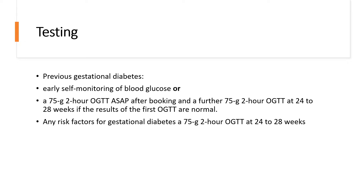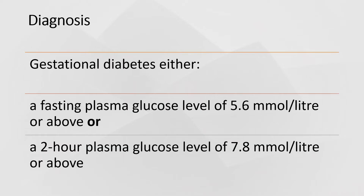For women with antenatal glycosuria, also offer glucose testing — this may be a GTT if they are within the 24–28 week window, or based on trust guidance depending on gestation. Very important: the diagnosis of gestational diabetes uses either/or criteria, and exam questions have specifically tested this. Gestational diabetes is diagnosed if there is either a fasting blood glucose of 5.6 mmol/L or above, OR a two-hour plasma glucose of 7.8 mmol/L or above. Either one is sufficient for diagnosis.